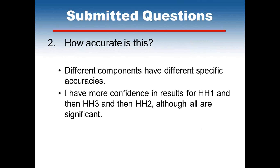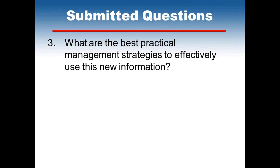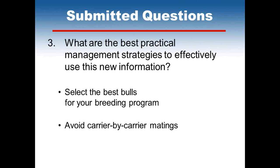Q: How accurate is this? Different components have different amounts of accuracy. There is more confidence in the results for Haplotype 1 than for 3 and then for 2, although all are significant. This is primarily based on the number of matings involved in the analysis. Q: What are the best practical management strategies? Select the best bulls for your breeding program, and after selecting those best bulls, avoid carrier-by-carrier matings. Following these two strategies, you can make lots of genetic progress.